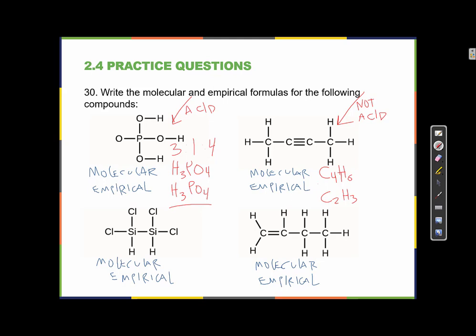Let's look at the next example: silicon, hydrogen, and chlorine. This is not an acid, so silicon is the most metallic element and goes first. There are 2 silicon, 2 hydrogen, and 4 chlorine, giving molecular formula Si2H2Cl4. These numbers can also be reduced: 2:2:4 is the same as 1:1:2 when divided by 2. So the empirical formula is SiHCl2.